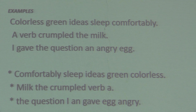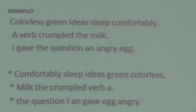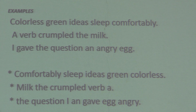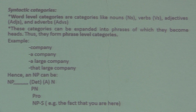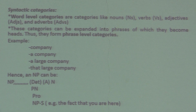When I rearrange these words incorrectly — such as 'comfortably sleep ideas green colorless' — they sound syntactically wrong. In the original sentence 'colorless green ideas sleep comfortably,' the two adjectives colorless and green correctly precede the noun 'ideas,' and the adverb 'comfortably' correctly modifies the verb 'sleep.' Now I move to an important element: syntactic categories.